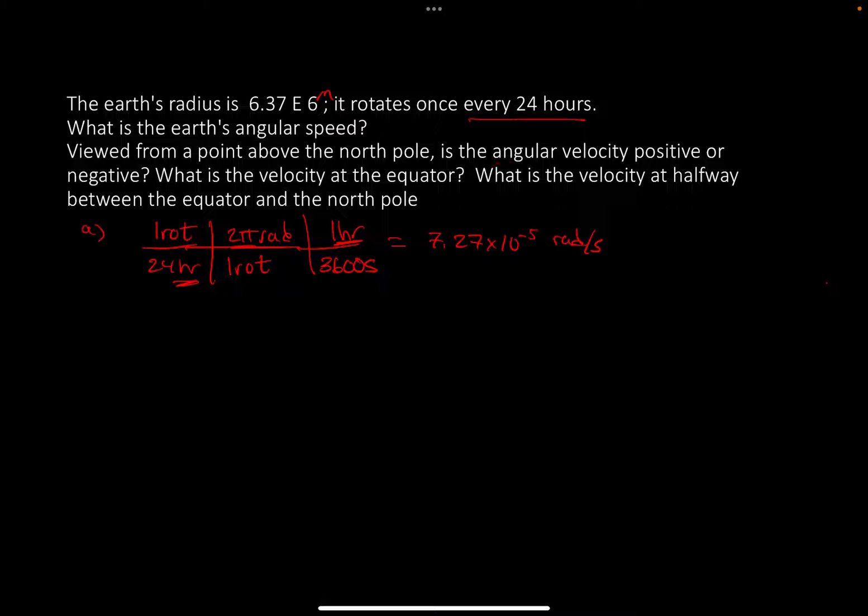Is the angular velocity positive or negative? It's going to be B, it's going to be positive. Because of the direction of its rotation. As it's rotating from the perspective of the North Pole, it's moving in a positive clockwise direction. So that's how you determine that.